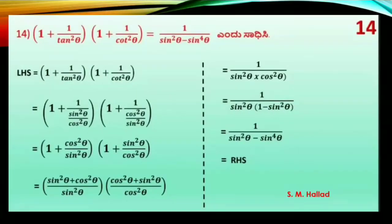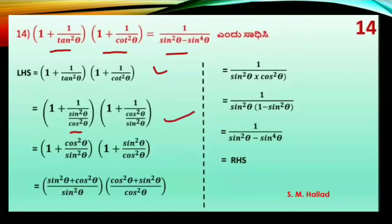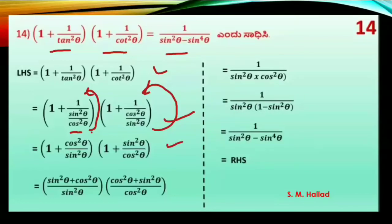1 plus 1 divided by tan²θ, and also 1 plus 1 divided by cos²θ. Using the identity: 1 plus 1 divided by tan²θ gives us the next step in the simplification.